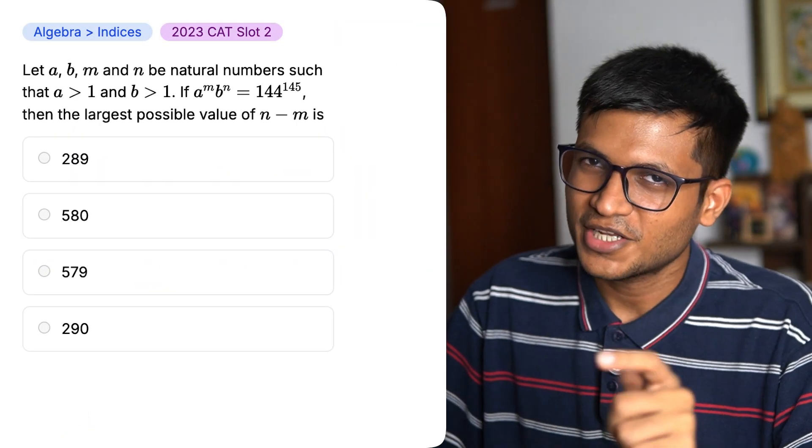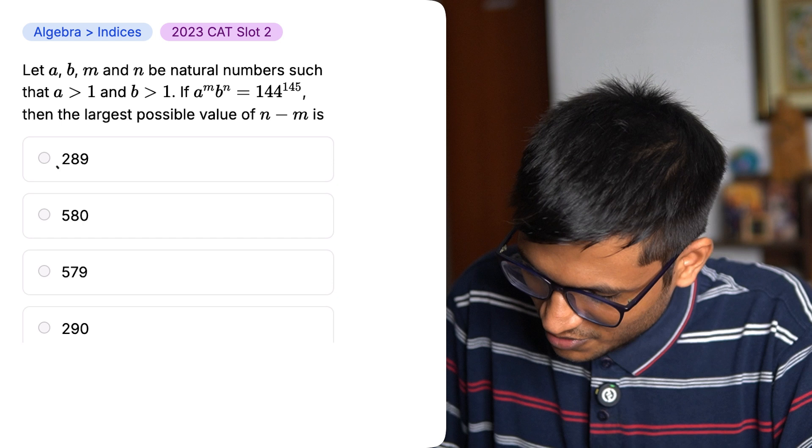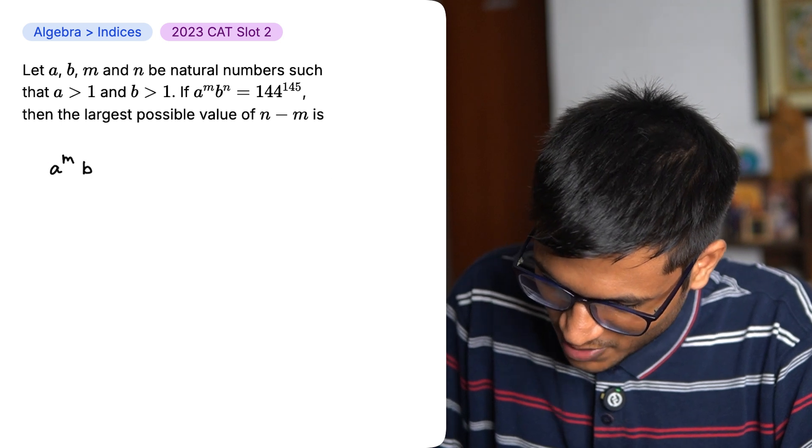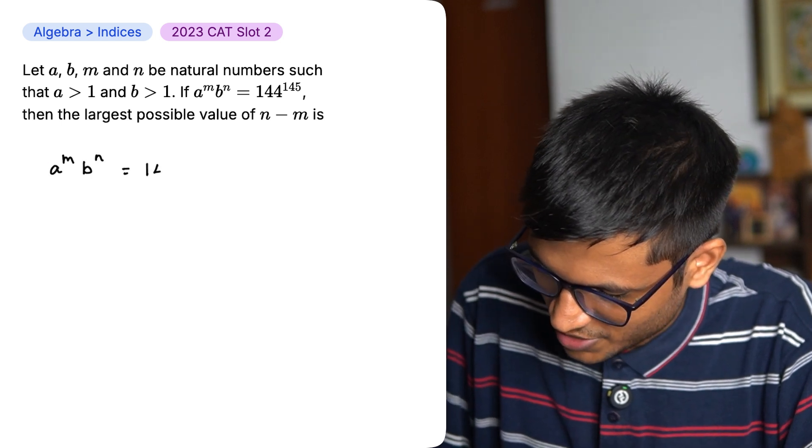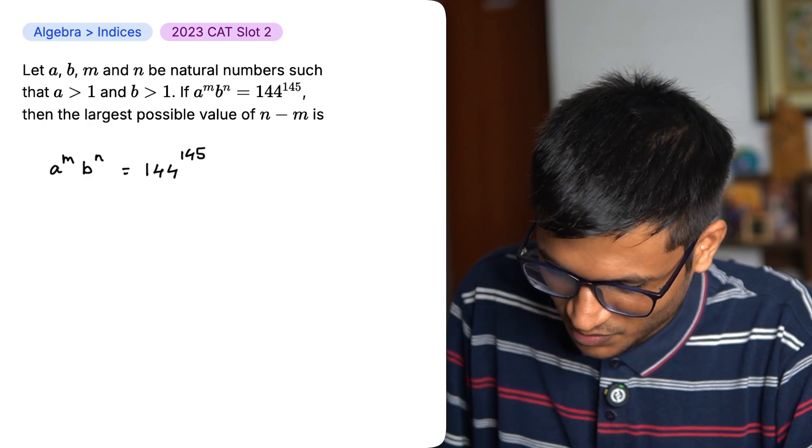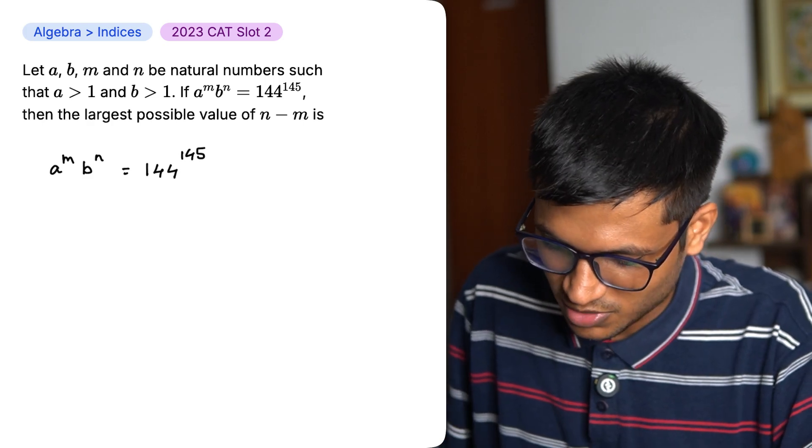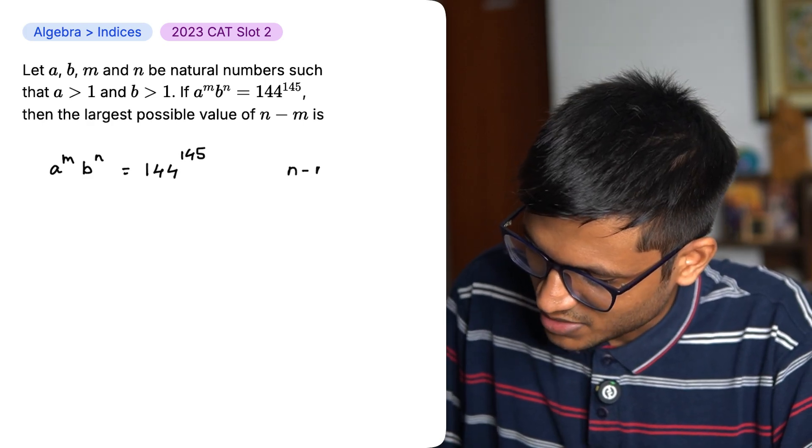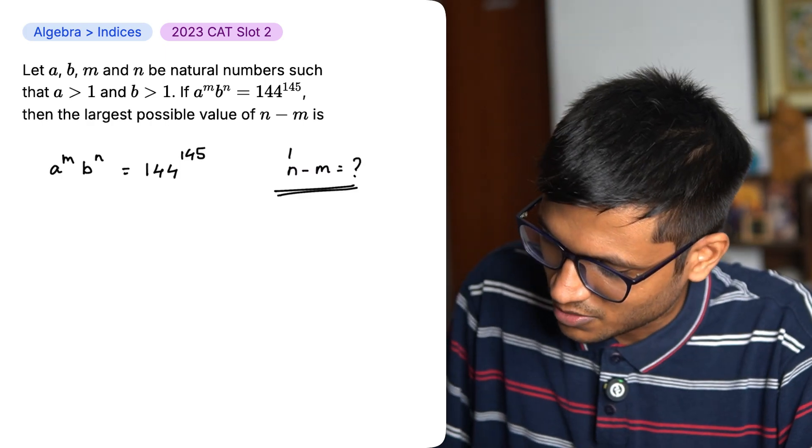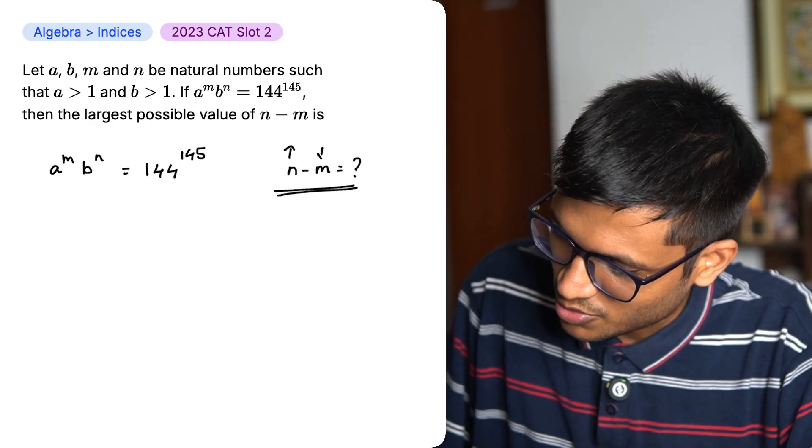Many got this wrong in CAT. Can you get it right? If a to the power m, b to the power n equal to 144 to the power 145, what is the largest possible value of n minus m? So n has to be the greatest and m has to be the least.